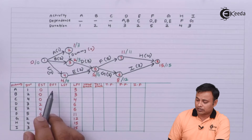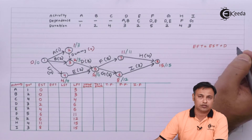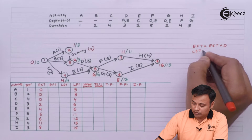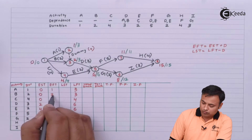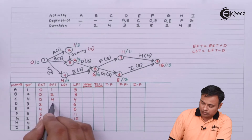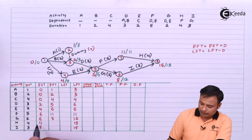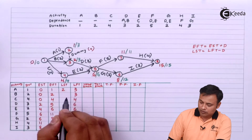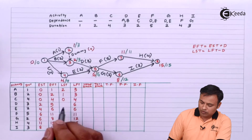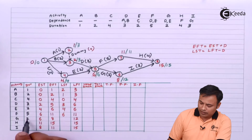Next is our calculation of earliest finishing time. The formula will be: Earliest Finishing Time = Earliest Starting Time plus Duration. For Latest Starting Time the formula will be: Latest Finishing Time minus Duration. So the EFT values are: 0+1, 0+2, 0+4, 2+3, 4+2, 6+5, 6+2, 11+4, and 8+3. The LST values are: 6-4, 6-3, 6-2, 11-5, 12-2, 15-4, 15-3.